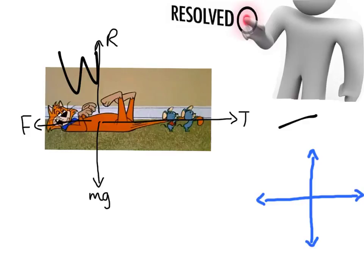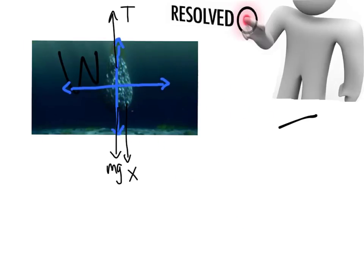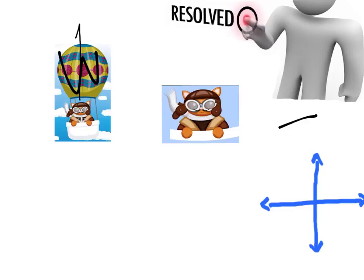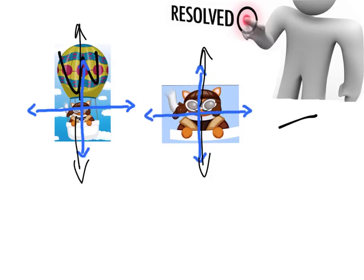This next one is easy — it's already done, there are no diagonal forces, we're already fully resolved. Another easy one from Finding Nemo: everything's going up and down, no diagonal forces, everything's under the axes — fully resolved. Same here, regardless of whether we treat the cat and the balloon as one whole thing or just look at the cat on its own; in both cases all the forces are just going up and down, no diagonal forces, so already fully resolved.